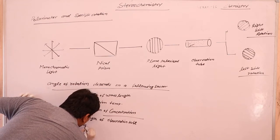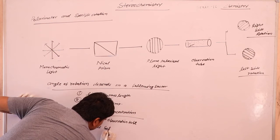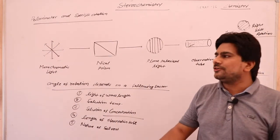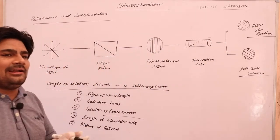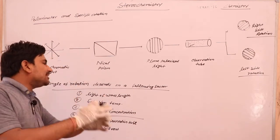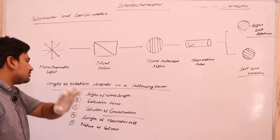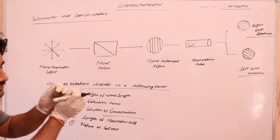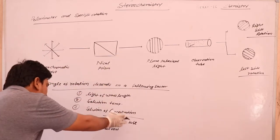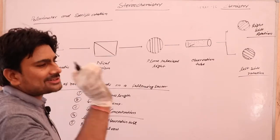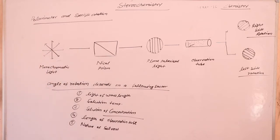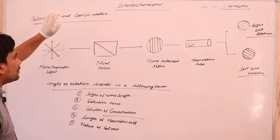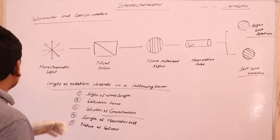चूँकि angle of rotation इन सभी factors पर depend करता है, इसलिए stereochemistry में हम angle of rotation को directly define नहीं करते। इसके लिए हम एक नया topic पढ़ते हैं — specific rotation — जहाँ wavelength, temperature, concentration, और observation tube की length सभी को fix कर दिया जाता है।